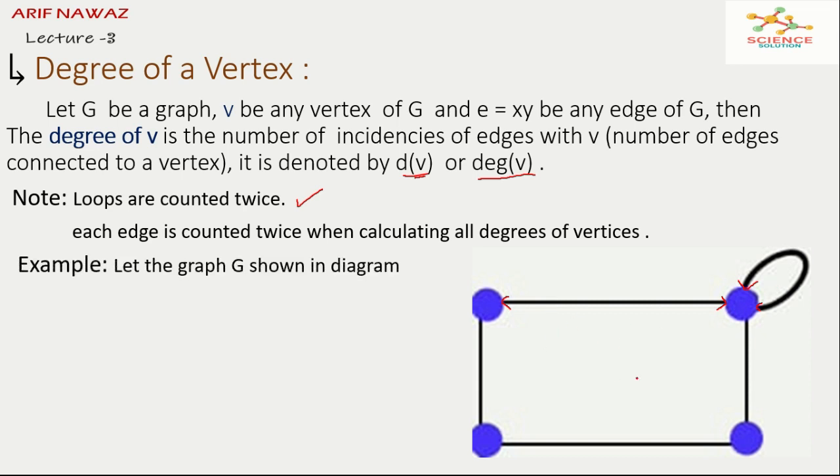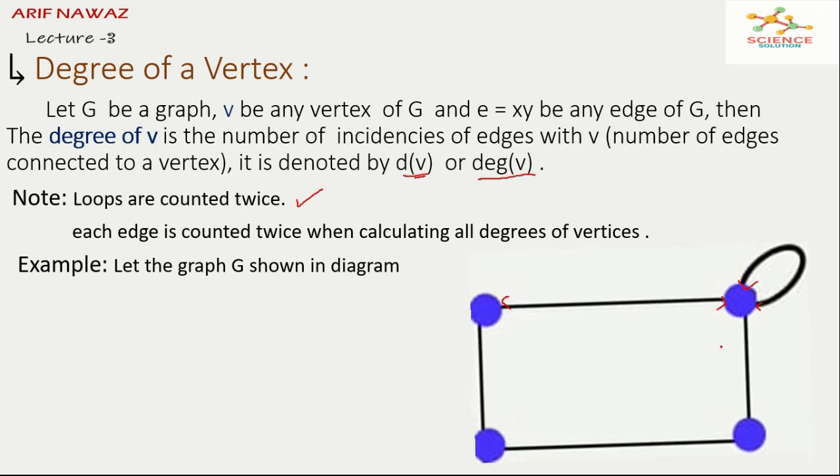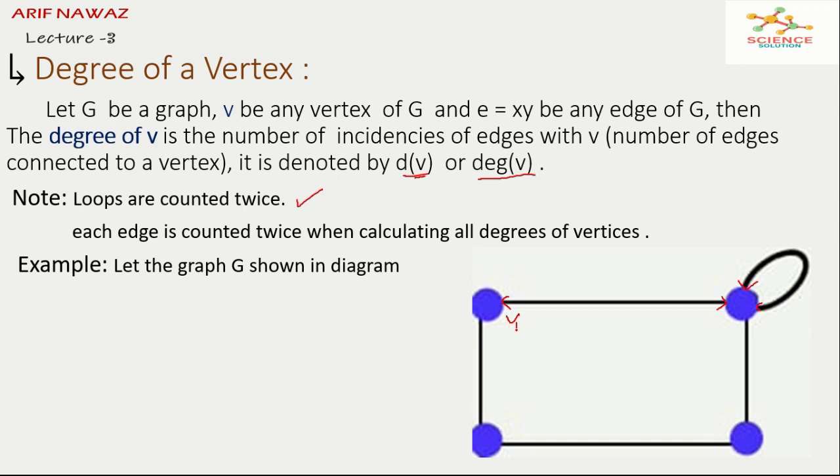Let the graph G shown in diagram. Let there are four vertices in a given graph: V1, V2, V3 and V4. We see that there are two edges are joined with vertex V1. So the degree of vertex V1 is equal to two.